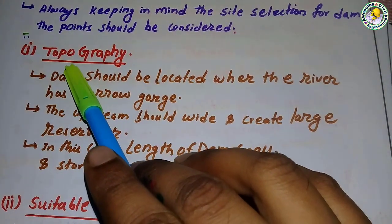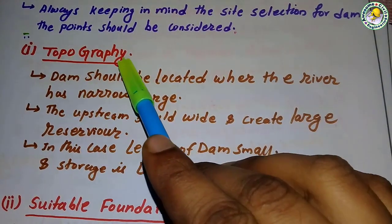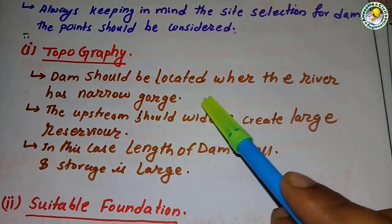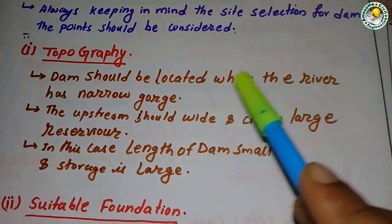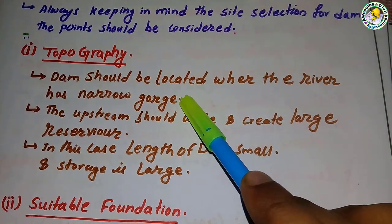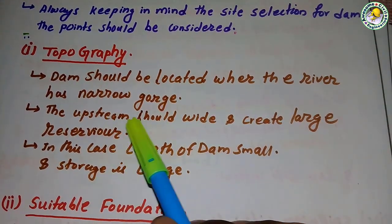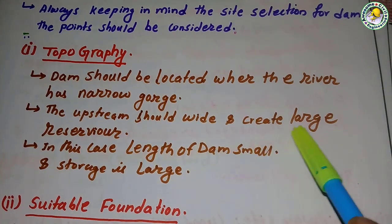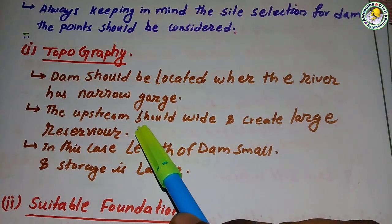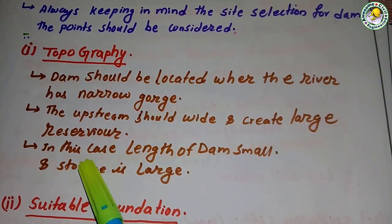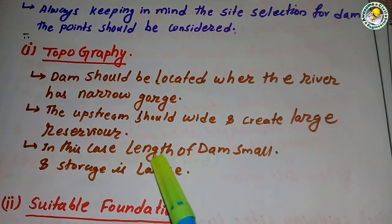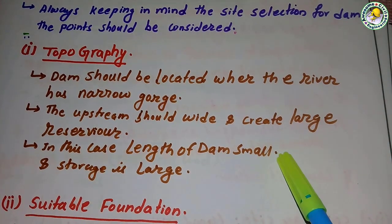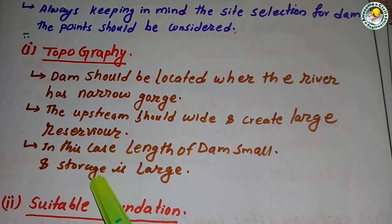Number one — according to topography, the dam should be located where the river has a narrow gorge. The upstream should be wide and create a large reservoir of water. In this case, the length of the dam should be small and the storage should be large.